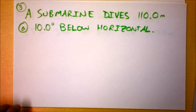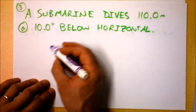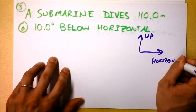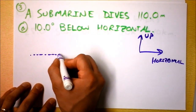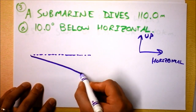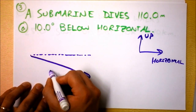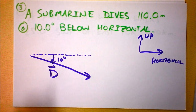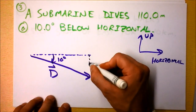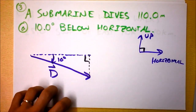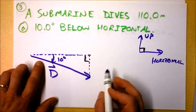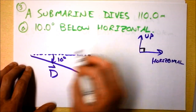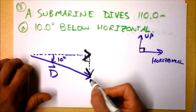The third problem: a submarine dives 110 meters at 10 degrees below horizontal. I'll declare up and horizontal as my axes. I draw a horizontal reference line and then vector D, which points 10 degrees below horizontal. I create the triangle with dotted lines along the axes, giving me a right angle. Vector D goes down and to the right, so the x-component points to the right and the y-component points downward.